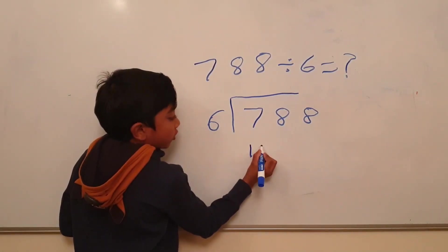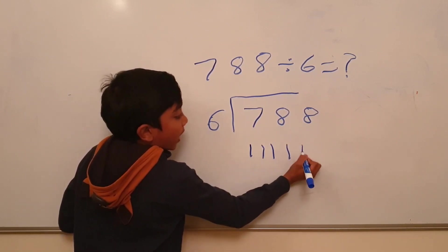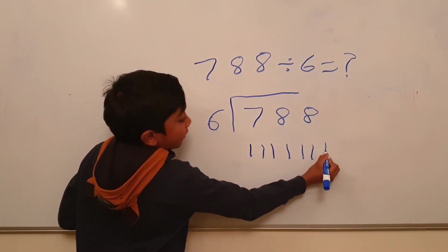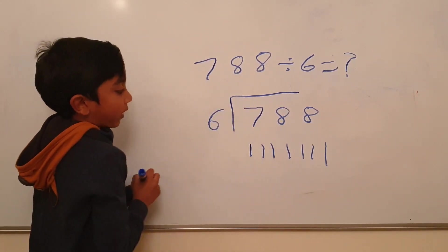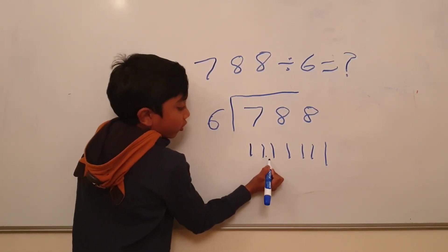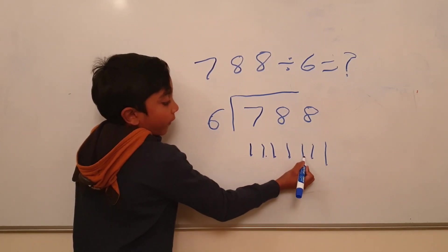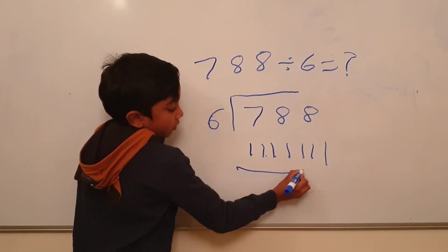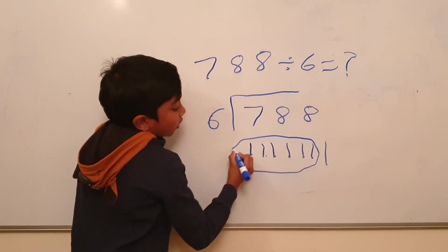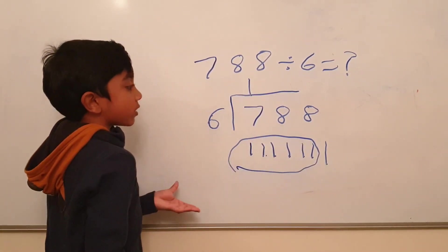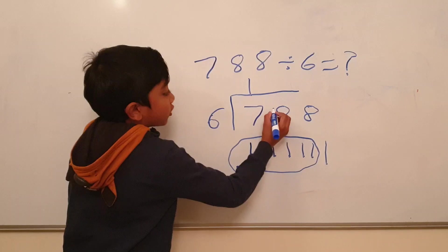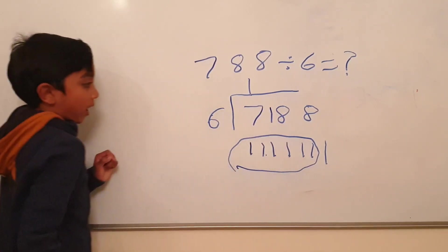Now how many 6 in 7? Only one group. And this only one couldn't get into the bus. So one has to stay with the others.